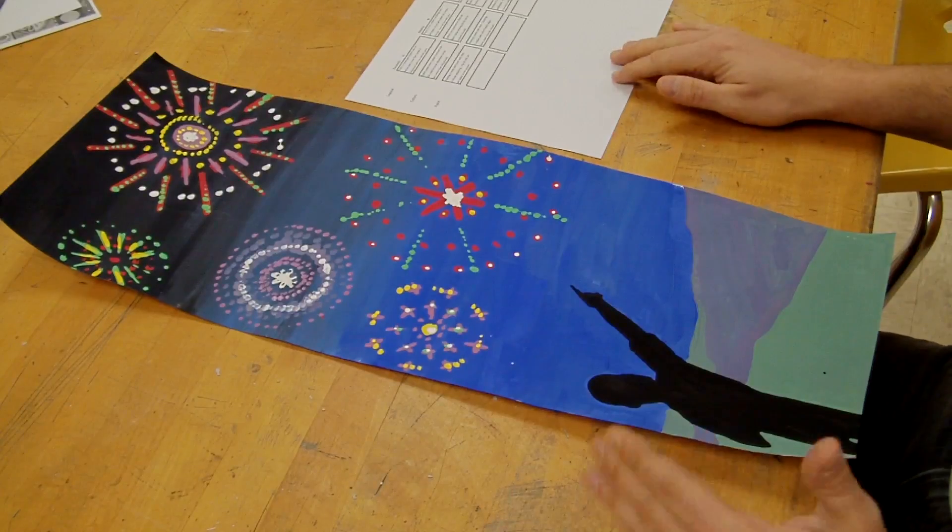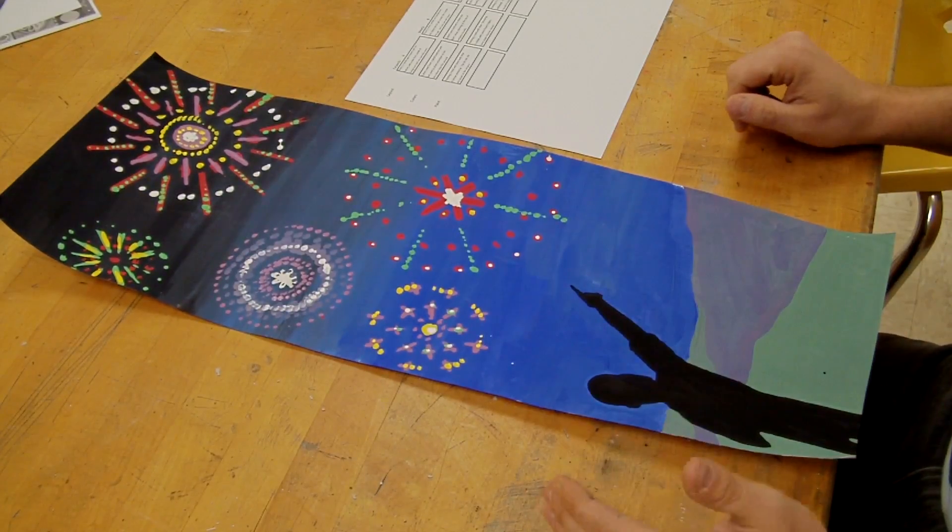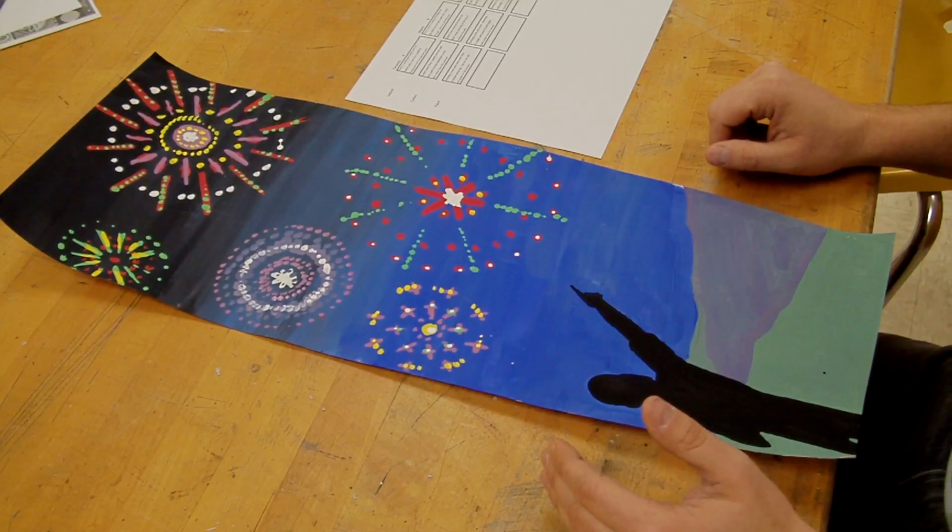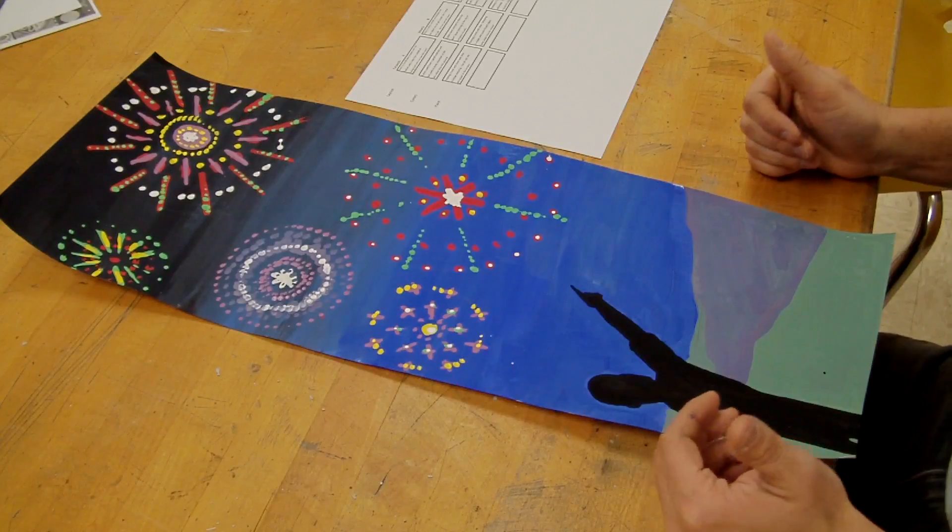So let's talk about the rubric. Here's your rubric, it's right up in front of you. First, there is a landscape located near the bottom with a clear foreground, middle and background with no parallel lines.